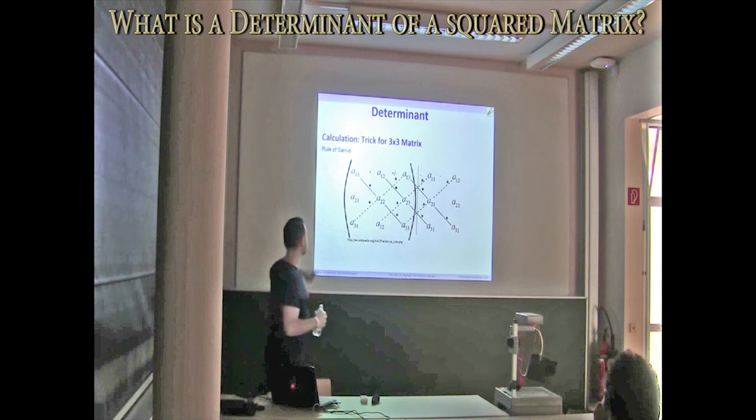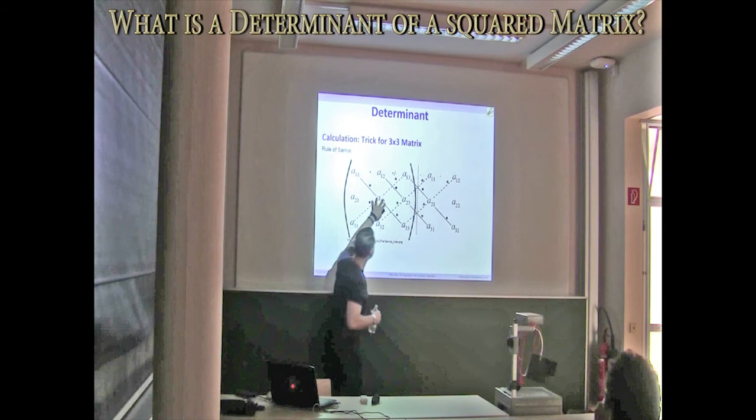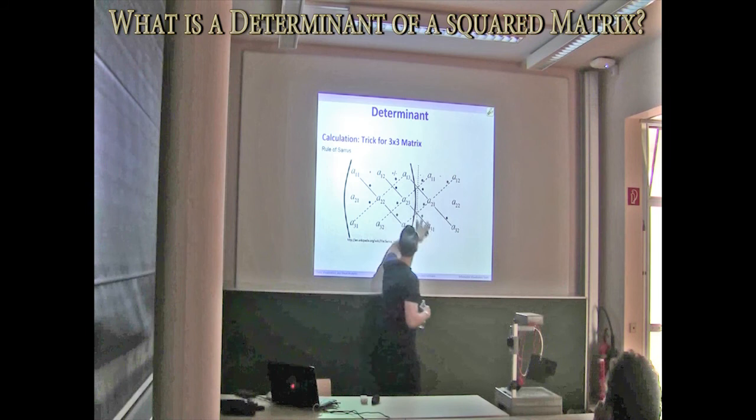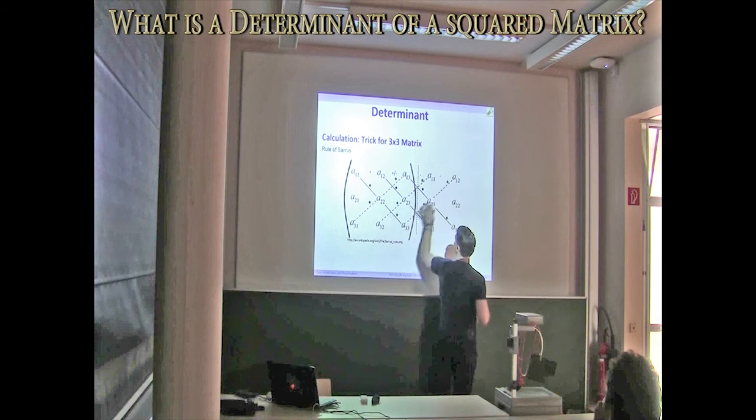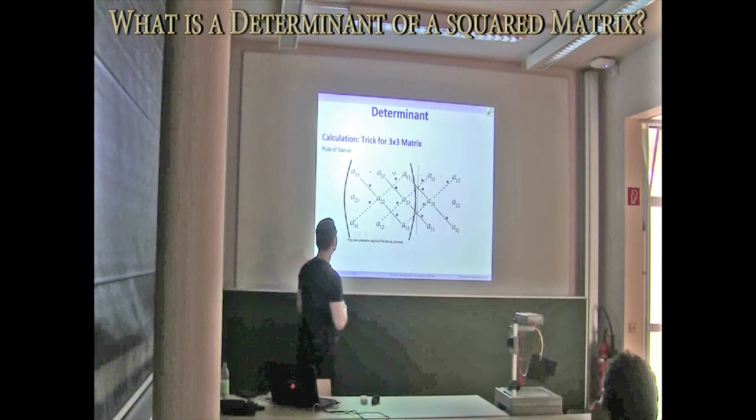And then you can do the same trick as we already did with the two-by-two. We can just say, okay, the determinant is given by the diagonal, A1,1 times A2,2 times A3,3, plus next diagonal, plus next diagonal, and so on, minus this diagonal, minus this diagonal, and minus this diagonal.